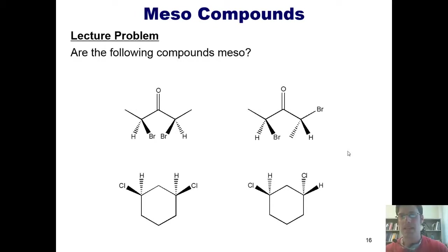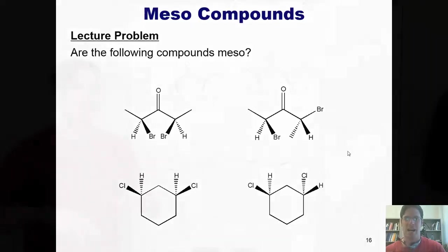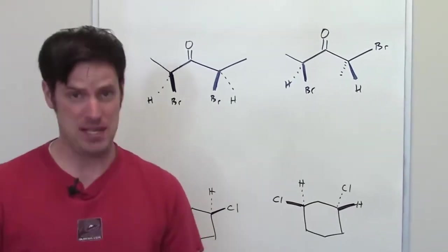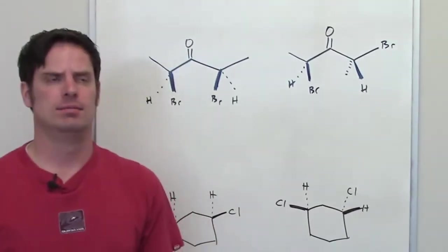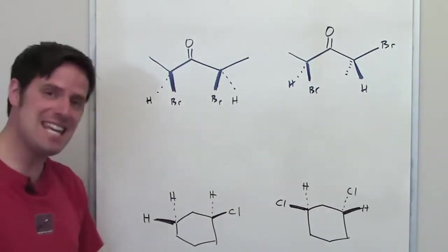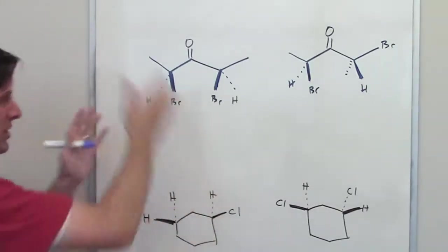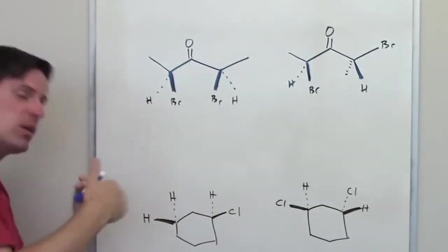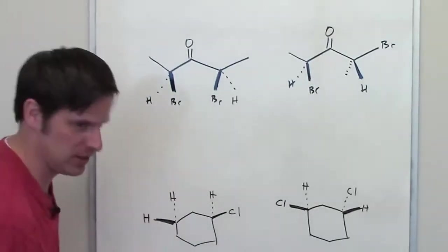Are the following compounds meso? Well, if you really want to know, I'll go ahead and explain the answer to this question right now. This question asks us to determine if each of these compounds is meso or not. Remember, a meso compound is any compound where you can draw a line down it and everything on one side of the line looks like the mirror image of everything on the other side of the line.